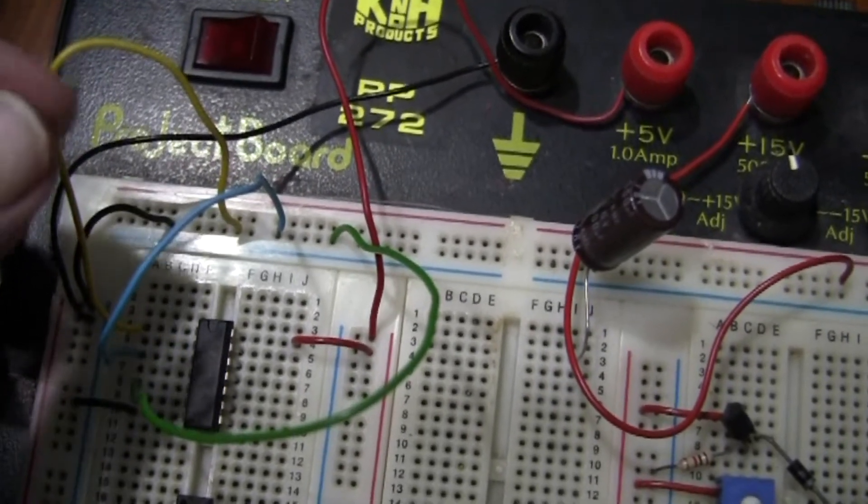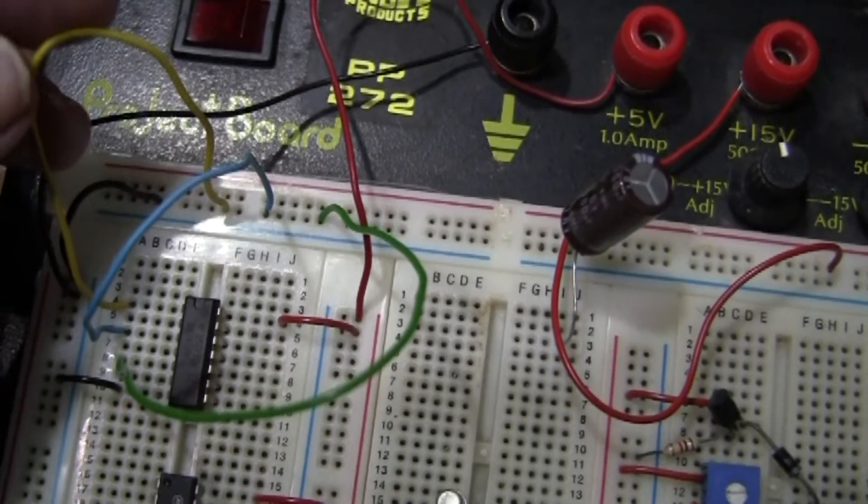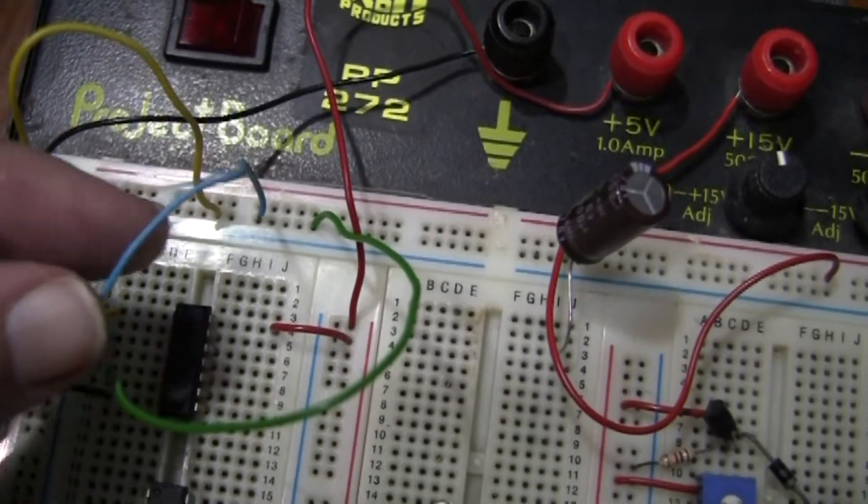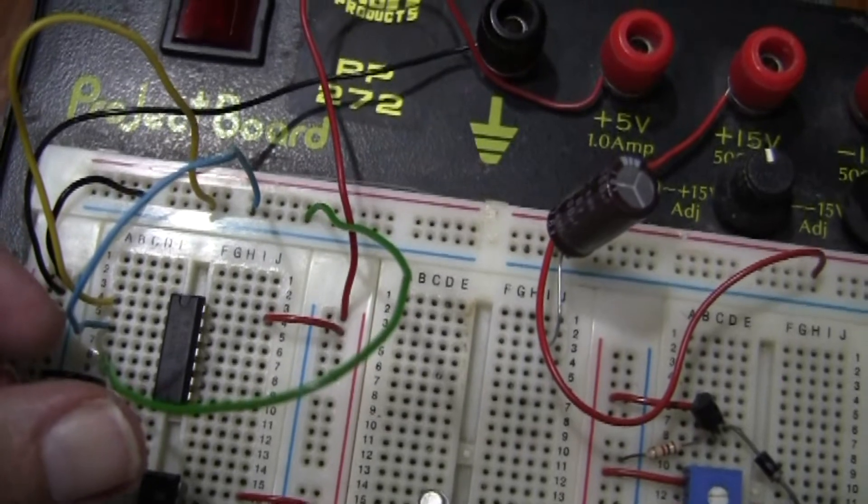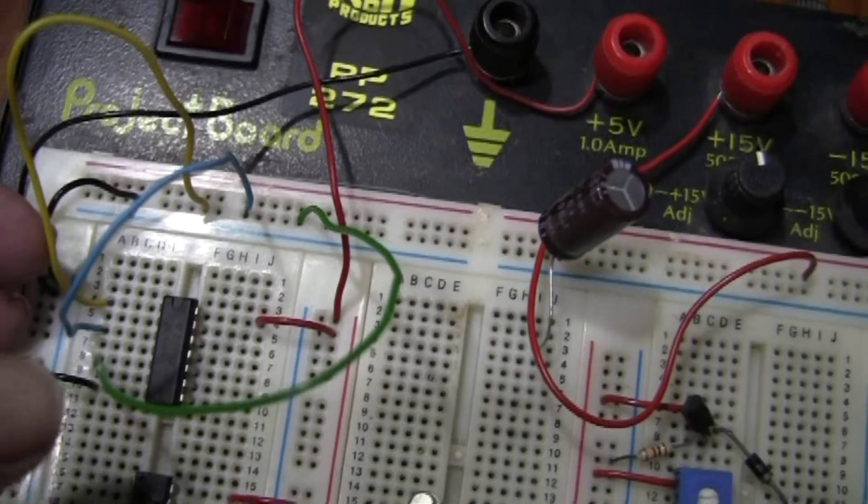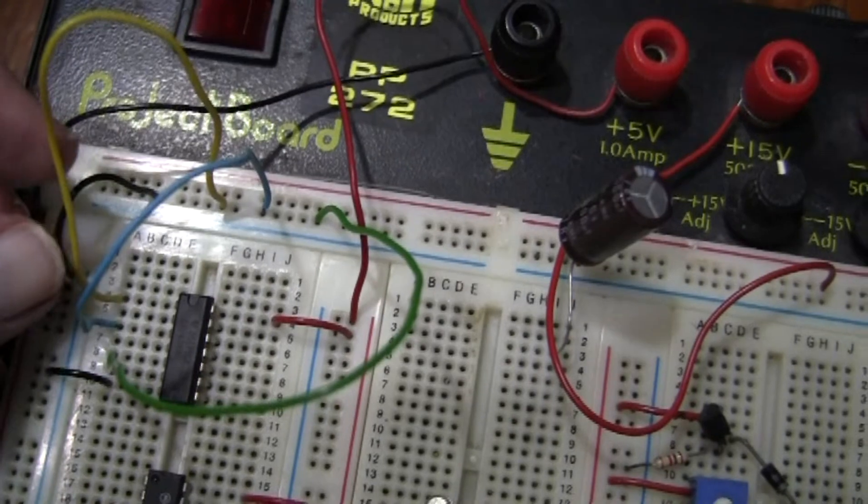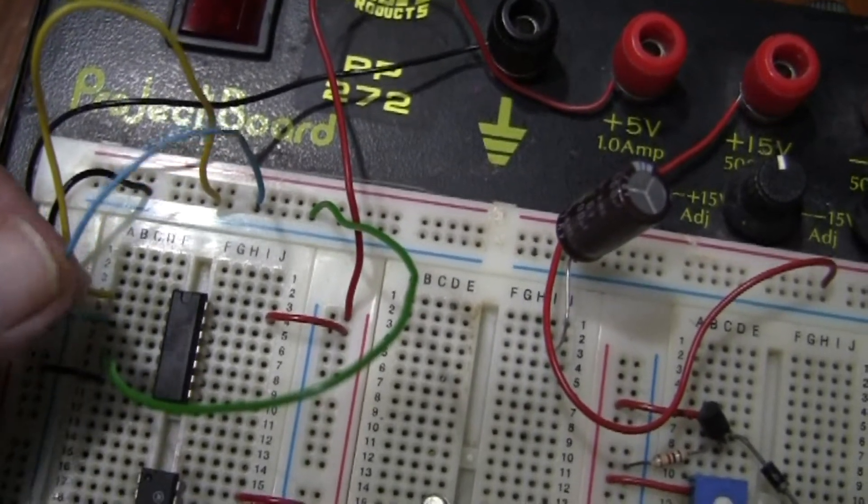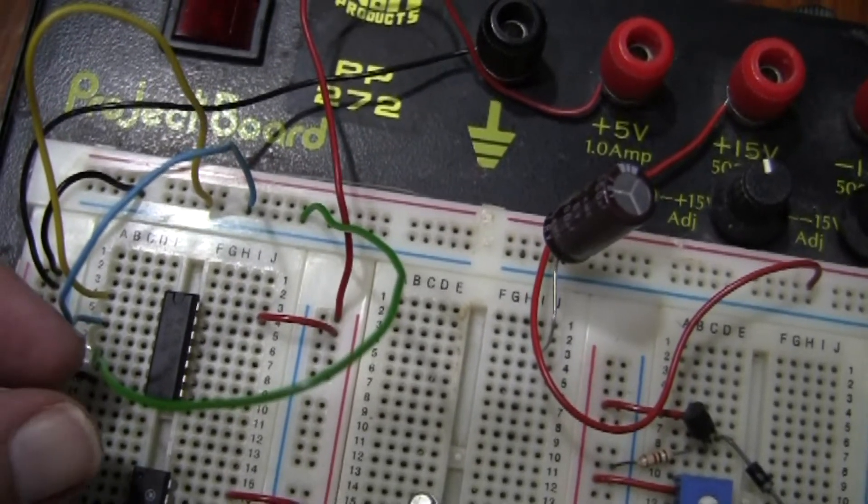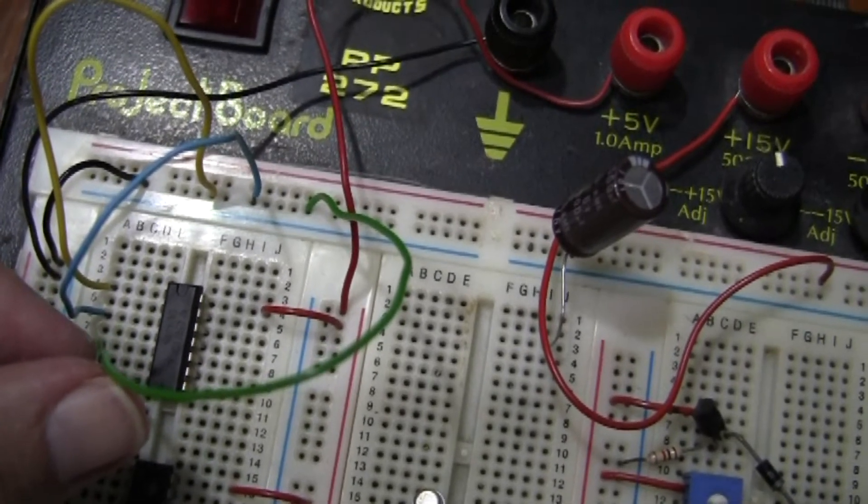And then you are going to pick three colors for your A, B and C which are your input. And you are going to put, in this case we have sort of yellow for A, blue for B and green for C. And you are going to put them into the input of your inverters here for this particular circuit. So you are going to have the yellow one going into pin 1. Then you skip a pin and you are going to have the blue one going into pin 3. Then you skip a pin and you are going to have the green one going into pin 5.